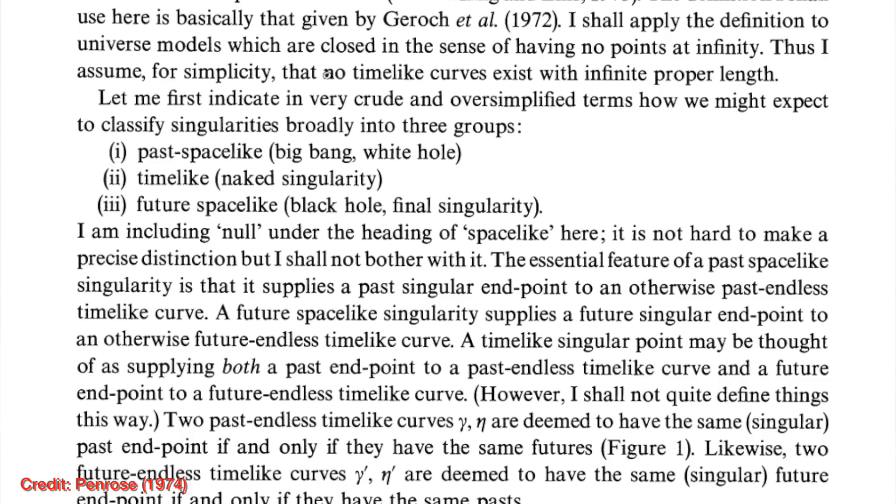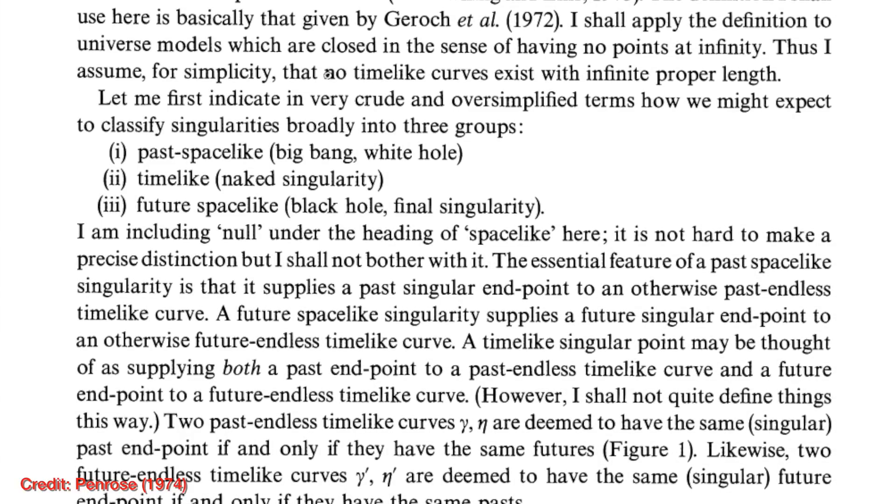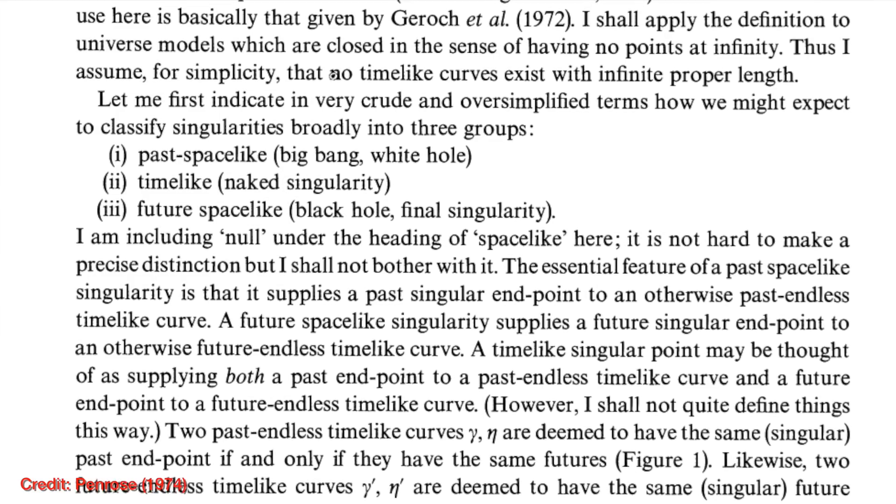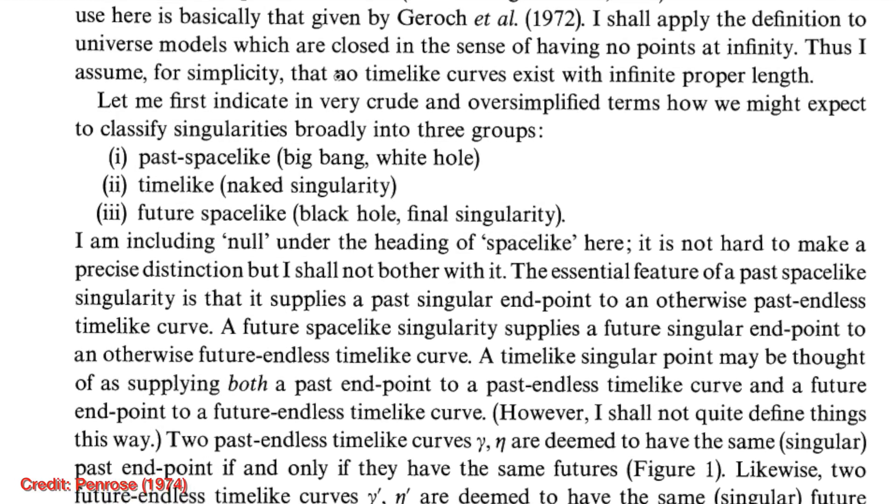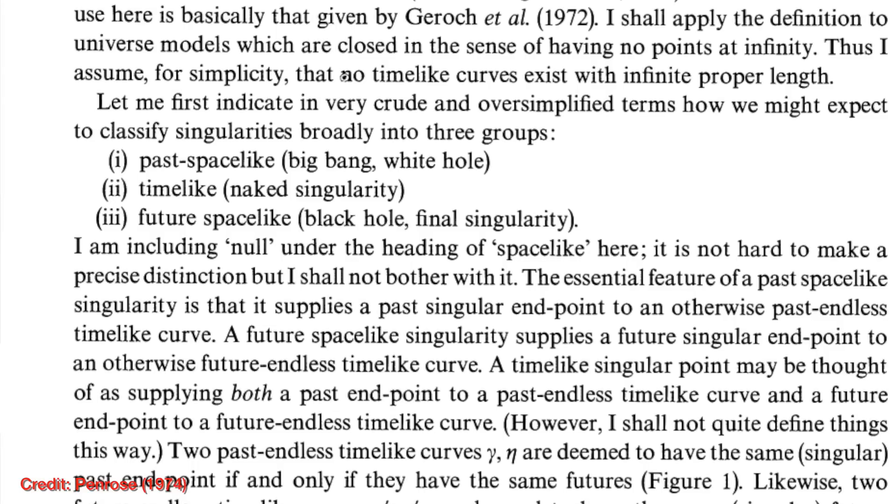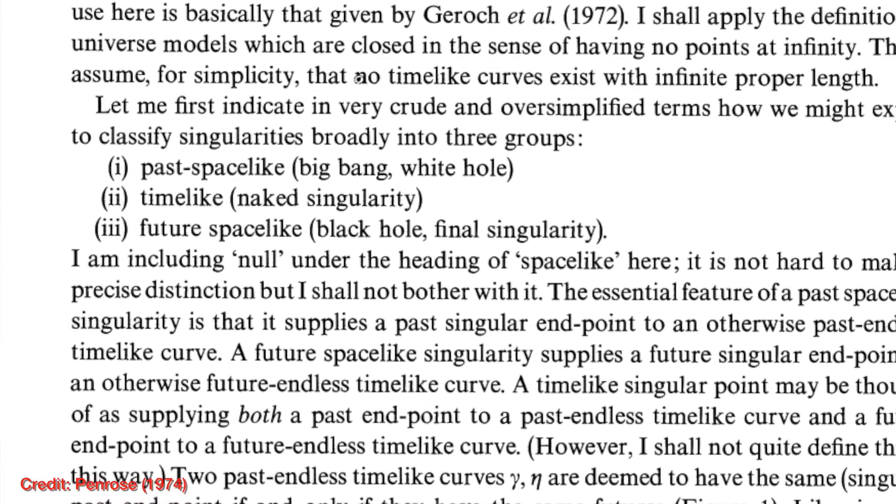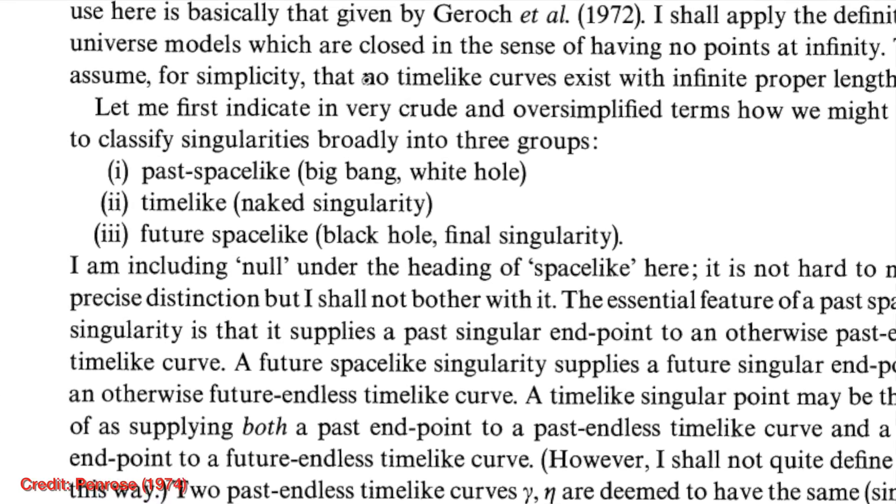Here's a list of all the types of different singularities from a paper by Roger Penrose from 1974, who's a famous mathematician, Stephen Hawking's colleague, and a recent Nobel Prize winner as well. What you can see is that the Big Bang and the white holes are listed as two different singularities.